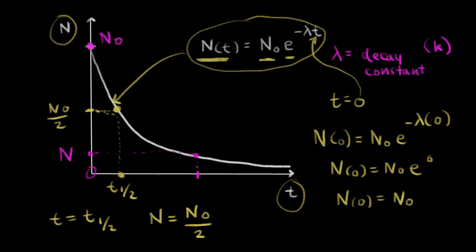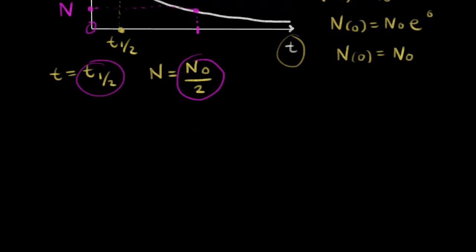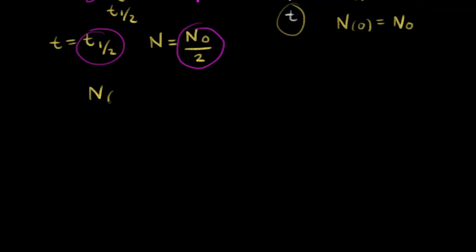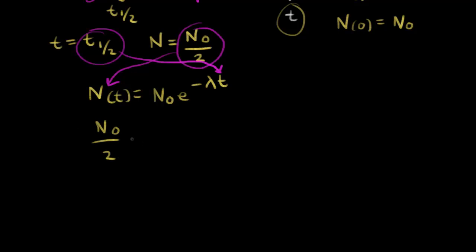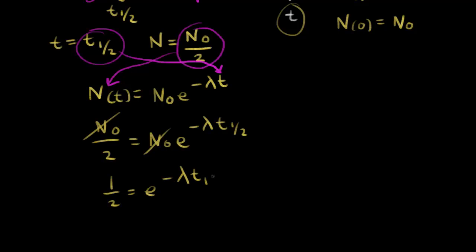Let's take the half-life and the corresponding number of radioactive nuclei and plug them into the equation: N(t) = N-naught times e to the negative lambda t. For the half-life, we plug in t = t½ and N = N-naught over two. So N-naught over two equals N-naught times e to the negative lambda times t½. The N-naughts cancel, giving us one-half equals e to the negative lambda times t½.